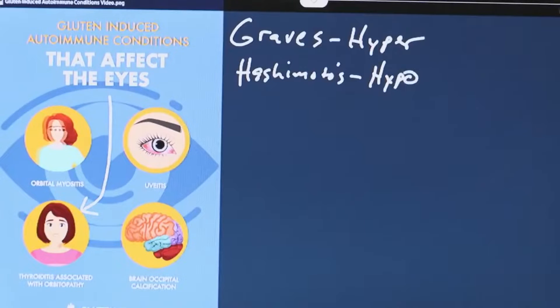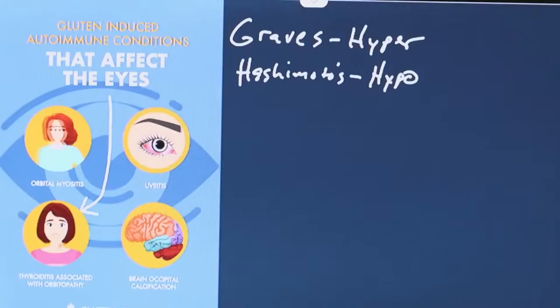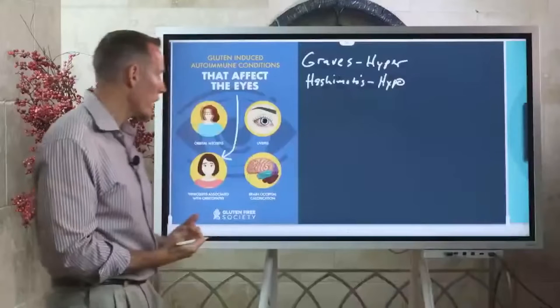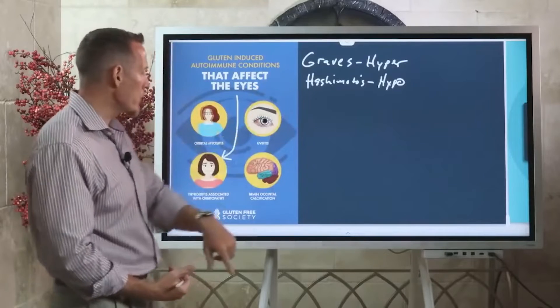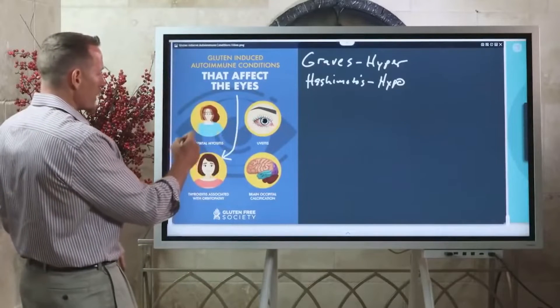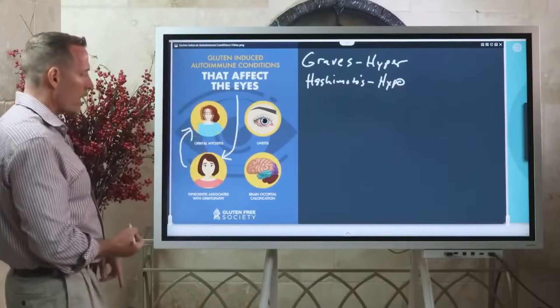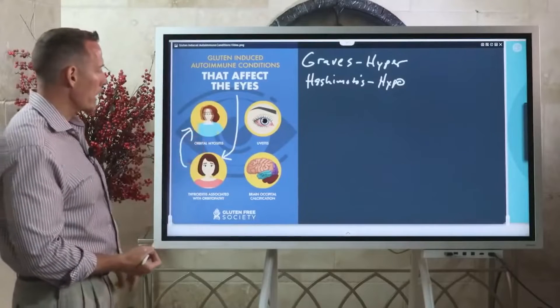They behave differently: in Graves', you're producing antibodies that mimic thyroid hormones, making your thyroid overreactive; in Hashimoto's, you're making antibodies that destroy your ability to produce thyroid hormones, so your thyroid is underactive. In either situation, you can develop orbitopathies. One manifestation is orbital myositis, where you start to see double vision because it's affecting the muscles in the eye that help you focus.